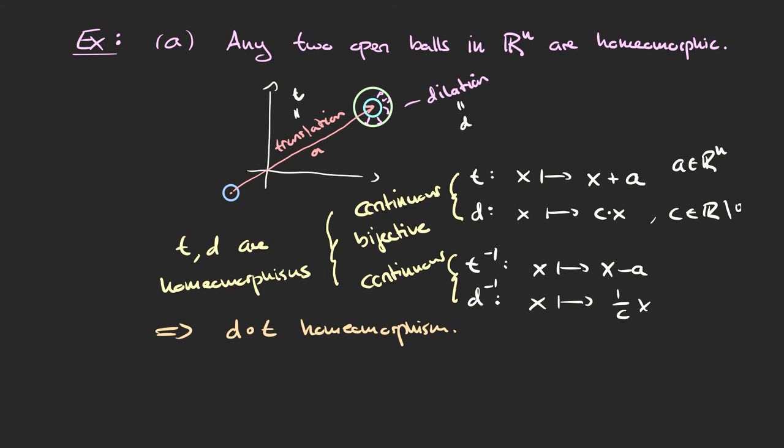A property is topological if it is preserved by homeomorphism. We see here that a small open ball and a larger open ball are homeomorphic, so the size or radius of the open ball is not preserved by homeomorphism and hence is not a topological property. From the point of view of topology, these two balls are essentially the same, even though they have different sizes when measured with the metric on Rn.